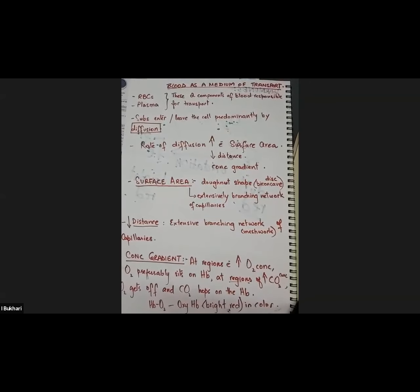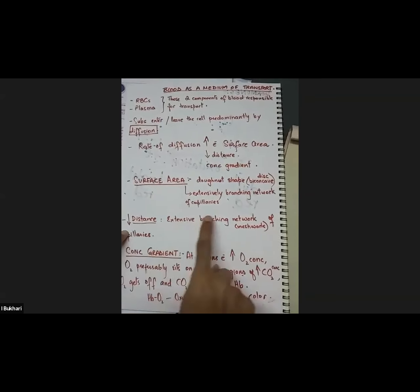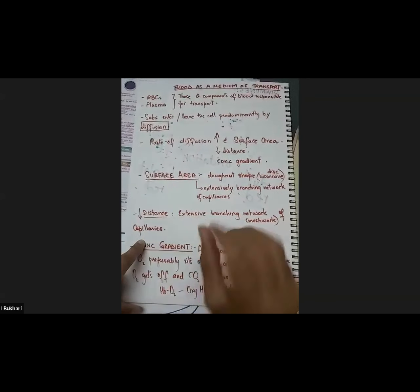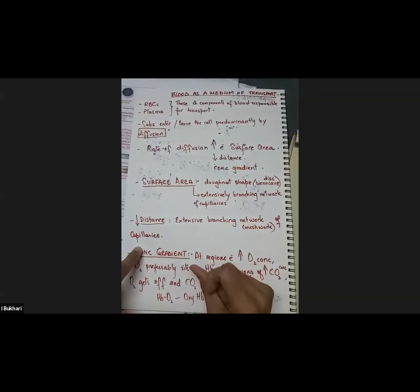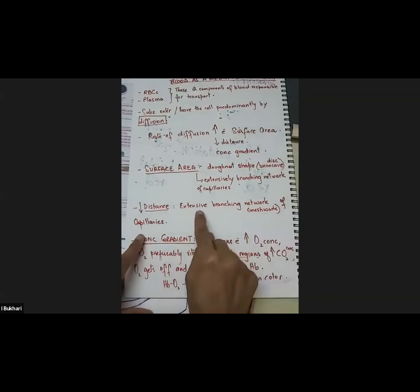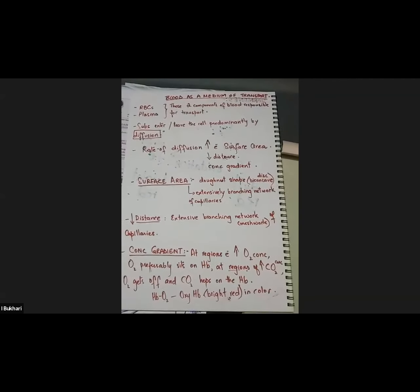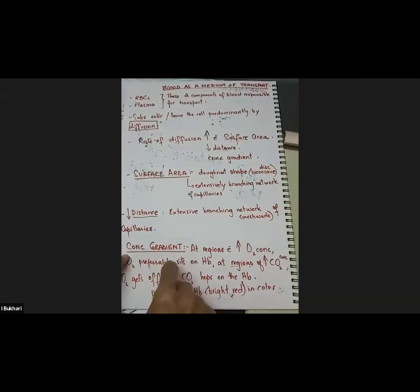How do we get increased surface area? Because increased surface area will increase the rate of diffusion. Increased surface area is achieved by the biconcave disc of the red blood cells, and secondly by the extensive branching network of capillaries. These two structural features increase the surface area and therefore increase the rate of diffusion. Also, the extensive branching of capillaries ensures that every last cell of the body is fed by the blood.